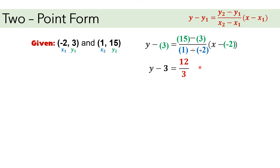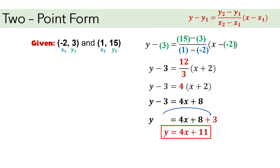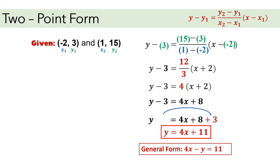Copy x and then another two negative signs: cancel the negative sign and it becomes positive, so we have x plus 2. After that, simplify the fraction: 12 over 3 becomes 4. Copy y minus 3 and x plus 2. Then distribute 4 to x plus 2: 4 times x gives 4x, and 4 times 2 gives positive 8. Write the answer in slope-intercept form by transposing negative 3 to the other side — it becomes positive 3. Combine with positive 8: 8 plus 3 gives positive 11. The equation is y equals 4x plus 11, and in general form, 4x minus y equals 11.